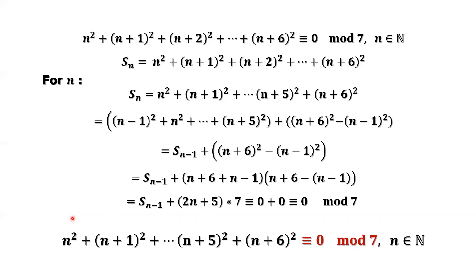We have done the proof by mathematical induction. In general, this is true: the sum of seven consecutive number squares divided by seven has a remainder of zero, meaning this number is divisible by seven.